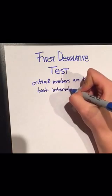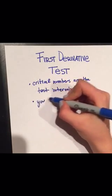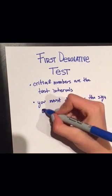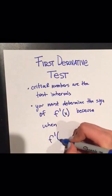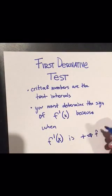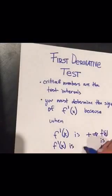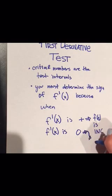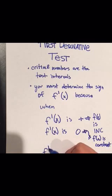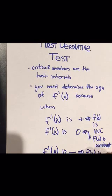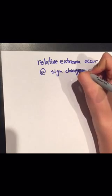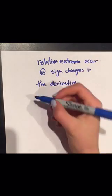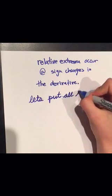Now, the first derivative test — for real this time. Critical numbers are going to make up the test intervals. You must determine the sign of f'(x): when f'(x) is positive, f(x) is increasing; when f'(x) is zero, f(x) is constant; and when f'(x) is negative, f(x) is decreasing. This is huge: relative extrema occur at sign changes in the derivative.